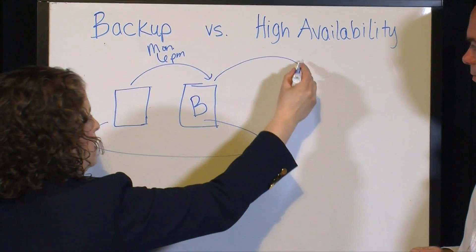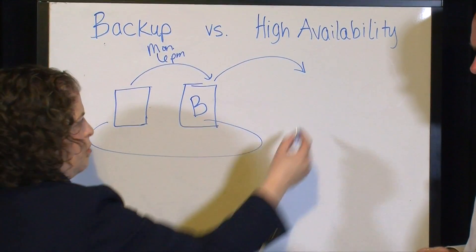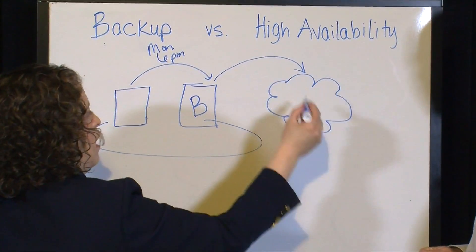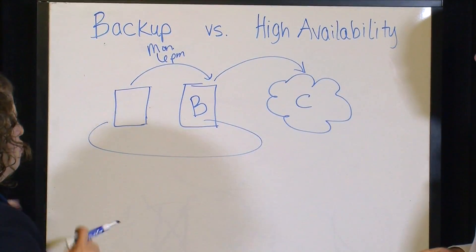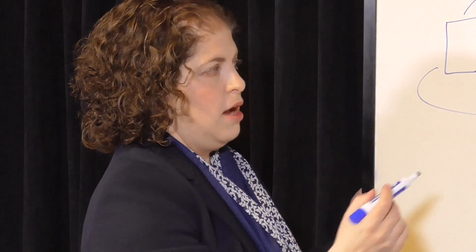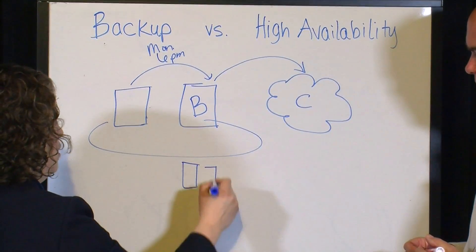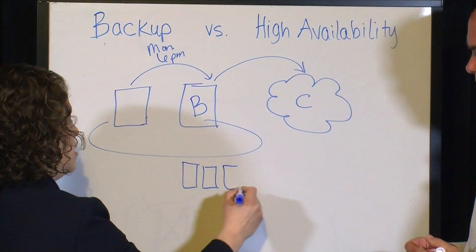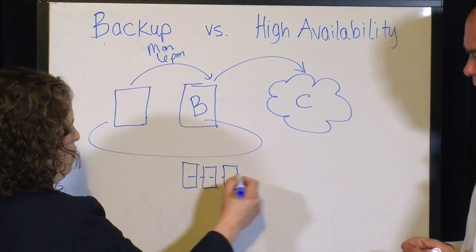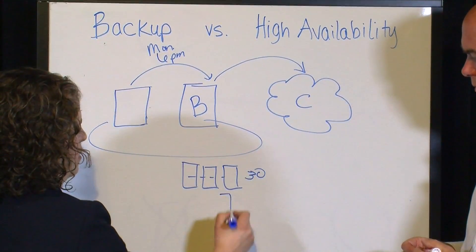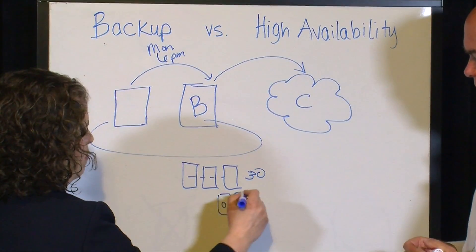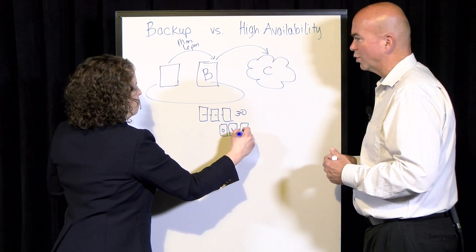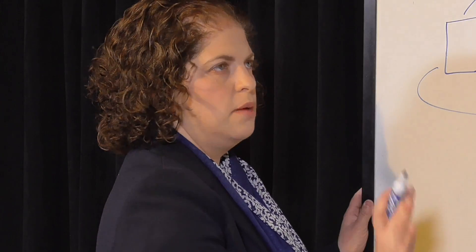Oftentimes, people will want a second copy somewhere safe, perhaps outside of their own data center, often in the cloud. These backups are usually stored over time. There are a lot of good reasons to keep daily backups and monthly backups — if you've lost a file, if legal comes hunting, if compliance comes hunting. So there's often about 30 days' worth of backup and then one for October, one for November, one for December. Basically, this is our historical record.